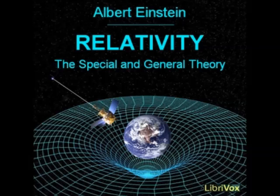We start off again from quite special cases, which we have frequently used before. Let us consider a space-time domain in which no gravitational field exists relative to a reference body K, whose state of motion has been suitably chosen. K is then a Galilean reference body as regards the domain considered, and the results of the special theory of relativity hold relative to K. Let us suppose the same domain referred to a second body of reference, K', which is rotating uniformly with respect to K. We shall imagine K' to be in the form of a plane circular disk, which rotates uniformly in its own plane about its center.